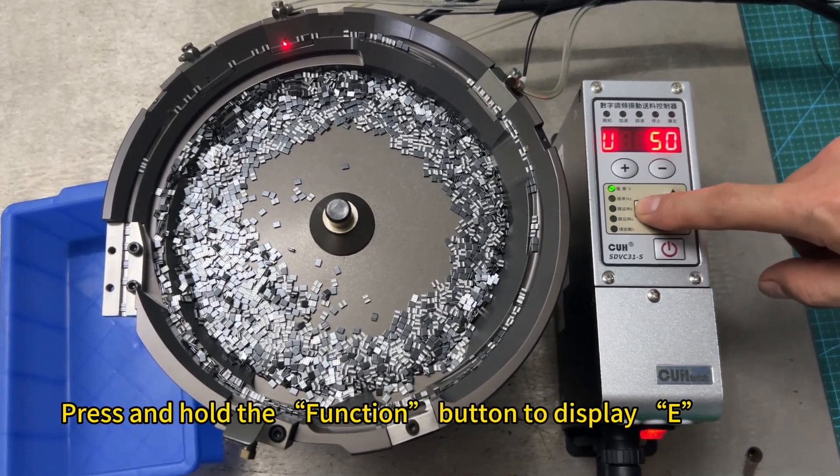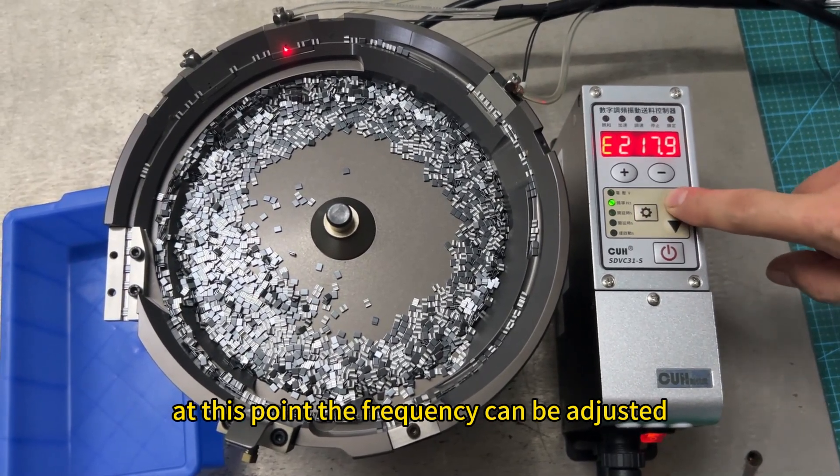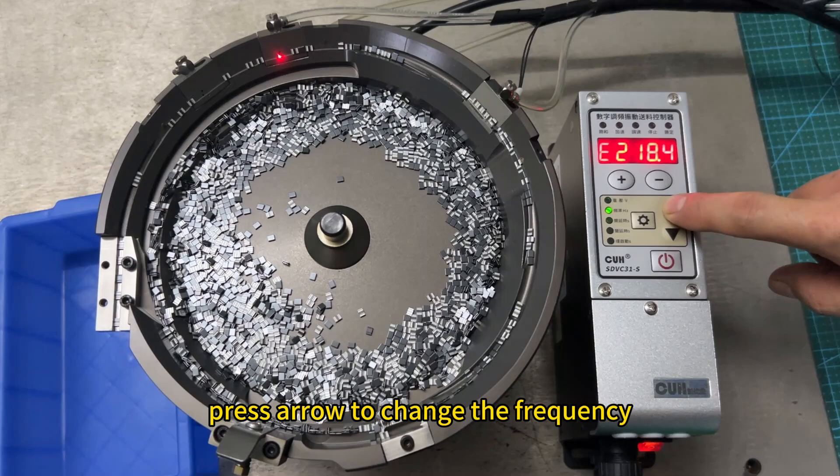Press and hold the function button to display E. At this point, the frequency can be adjusted. Press arrow to change the frequency.